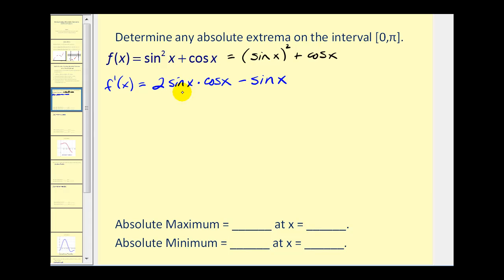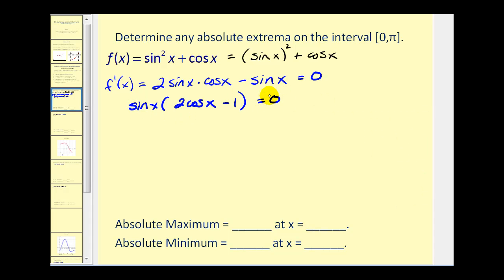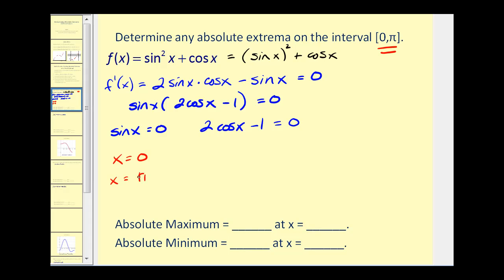To find the critical numbers, we set this equal to zero and solve. We have a common factor of sine x, so let's factor that out. This equation equals zero when sine x equals zero, or when two cosine x minus one equals zero. On the interval from zero to pi, sine x equals zero when x equals zero and x equals pi. Solving the second equation, cosine x equals one-half, and a 60-degree angle has a cosine value of one-half, so x equals pi over three.